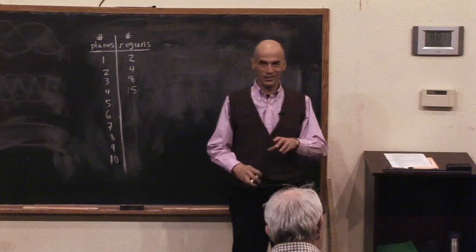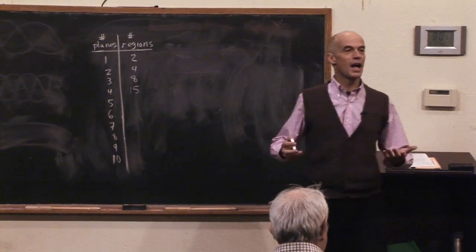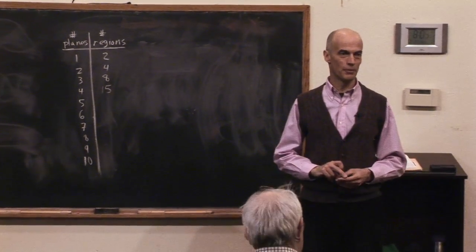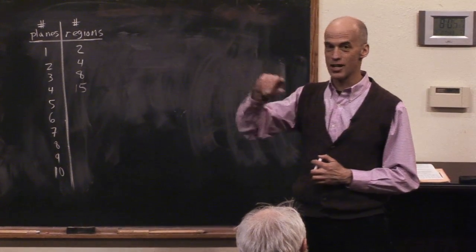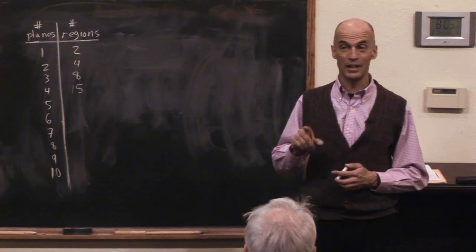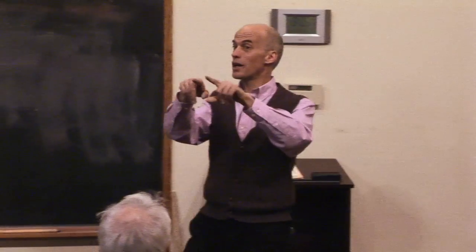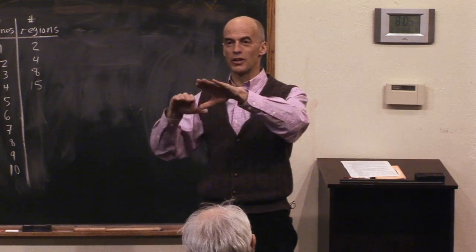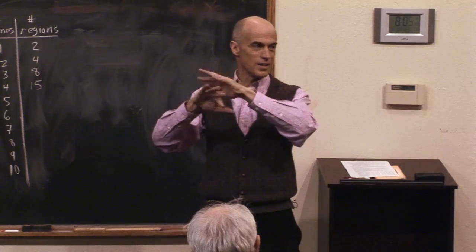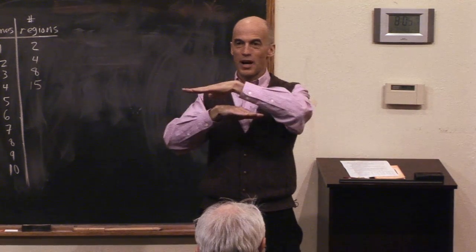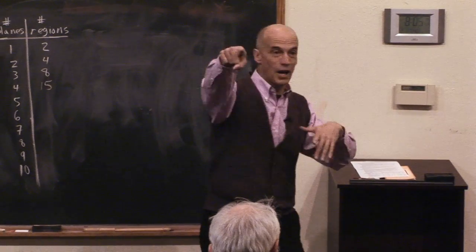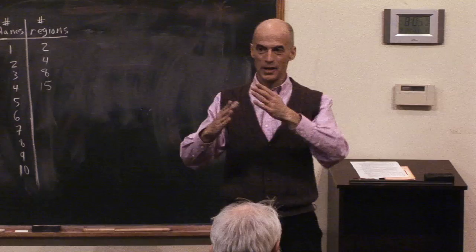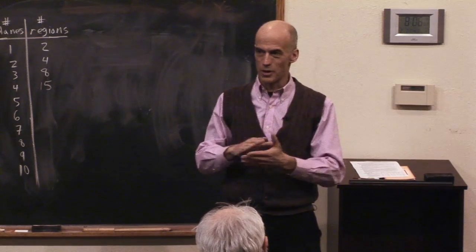Trying to add a fifth plane, you can probably do it, but that's going to be really hard. Here's the thing — what do we do in mathematics all the time? We change the problem. We make it easier, and then we learn something from it and then we go forward. We don't want the planes all to intersect at one point. We don't want planes to do anything funny or special; we just want it to be totally random. So we're not going to have parallel planes — they kind of mess things up.